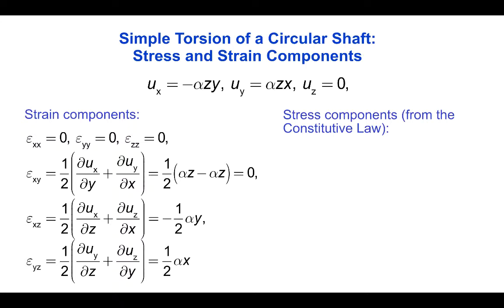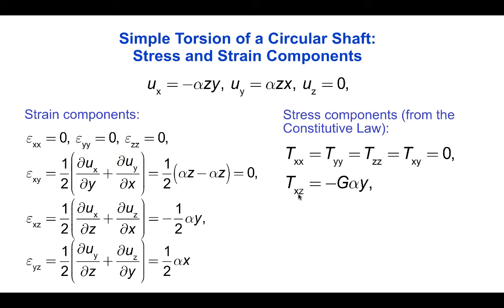Substituting these strains into the constitutive law for the isotropic Hookean elastic material, we get that the normal stresses t_xx, t_yy, t_zz, and the shear stress t_xy are all zero, leaving only two non-zero stresses: t_xz = -mu*alpha*y = -G*alpha*y, and t_yz = G*alpha*x, directly proportional to the corresponding shear strain components.